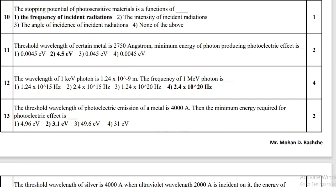The threshold wavelength of a certain metal is 2750 angstrom; the minimum energy of a photon producing the photoelectric effect is 4.5 electron volt. The wavelength of a 1 keV photon is 1.24 × 10⁻⁹ meter.